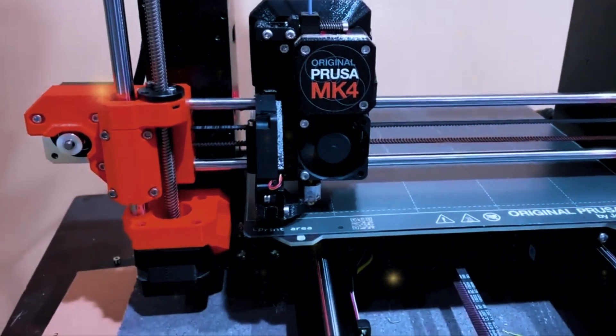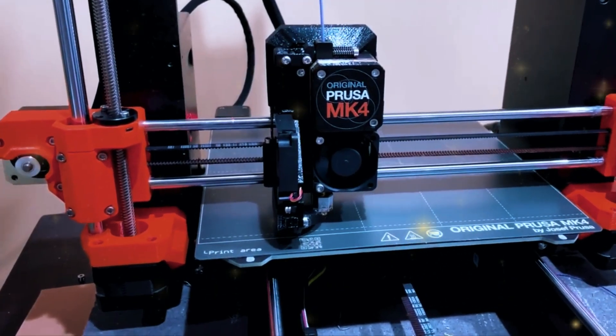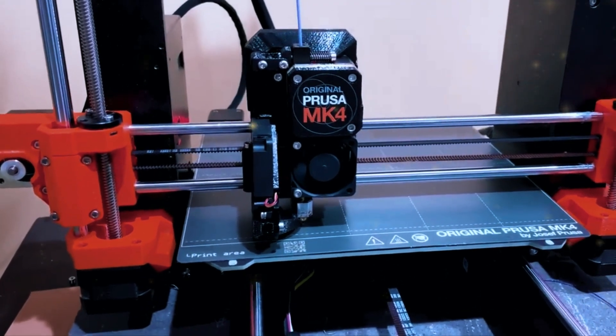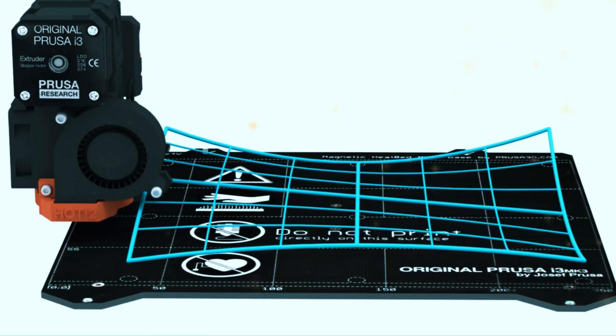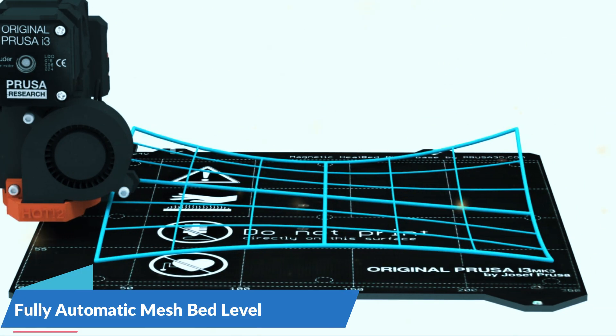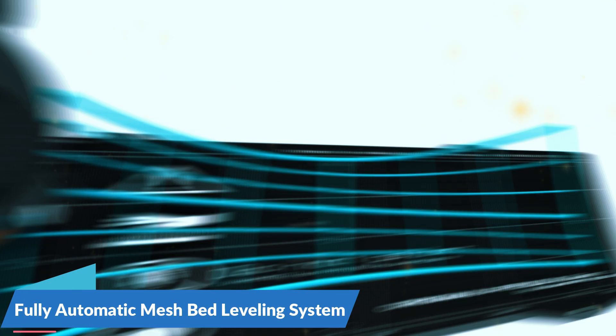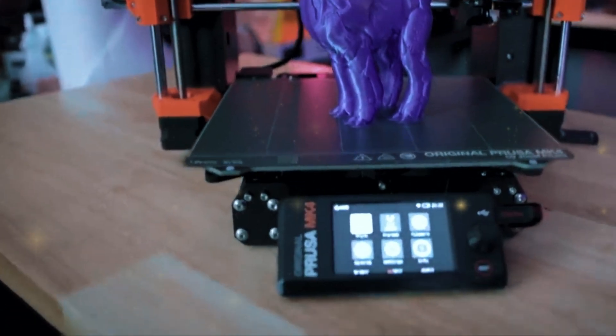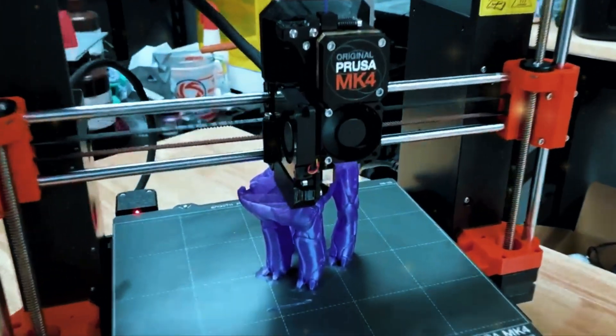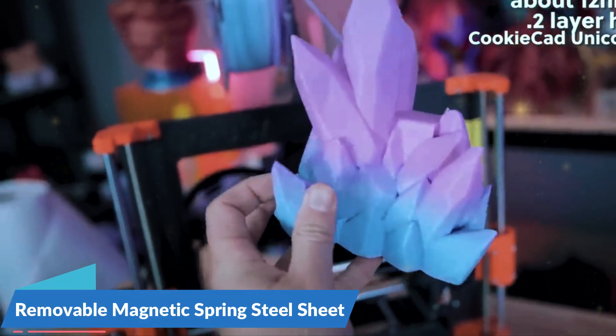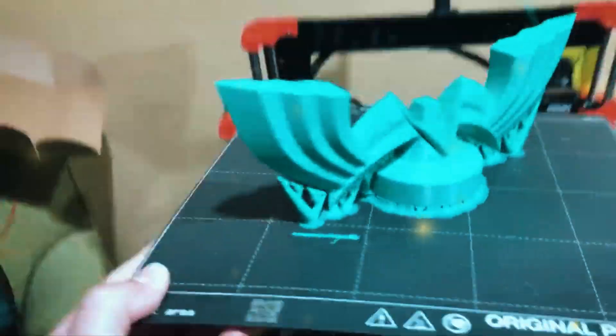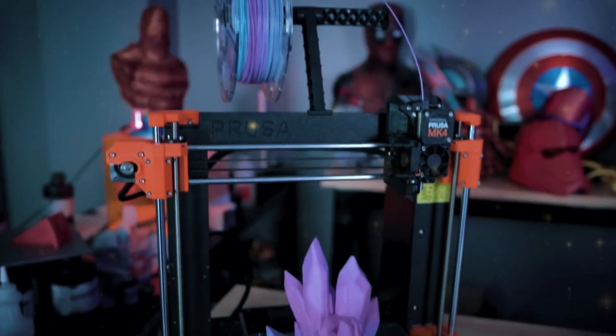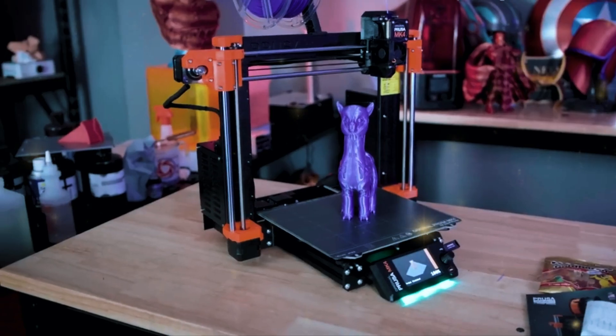The printer is equipped with a high-quality direct-drive extruder, which provides excellent filament control, making it especially good for printing with flexible or exotic materials. The Prusa MK4 also features a fully automatic mesh bed leveling system, which ensures that your print bed is perfectly level every time, significantly reducing the chances of print failures. Another standout feature of the MK4 is its removable magnetic spring steel sheet, which makes it easy to remove finished prints without damaging them.